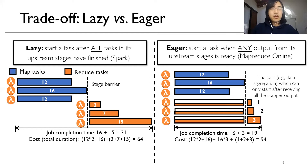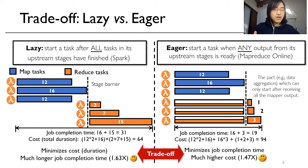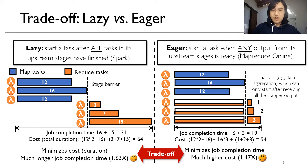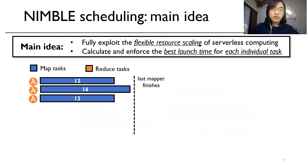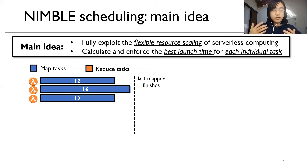Taken together, we observe a trade-off. On one hand, the lazy scheme minimizes cost but introduces a much longer job completion time. On the other hand, the eager scheme minimizes job completion time but introduces a much higher cost. In this work, we propose Nimble scheduling to break this trade-off. The main idea is that by fully exploiting the flexible resource scaling of serverless computing, we can calculate and enforce the best launch time for each individual task.